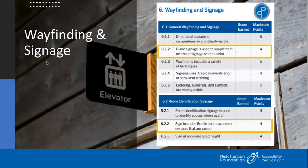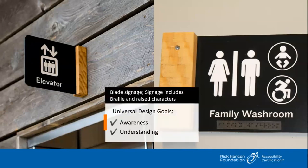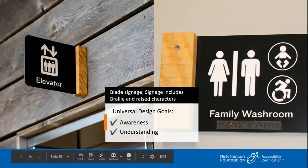Signage and wayfinding — I want to point out the benefits of what we call a blade sign: a sign that sticks out from the wall with both words and symbols, so somebody down a hallway can see it. They're especially useful above washrooms when they're down a long corridor. This is the family washroom sign located on the latch side of the door. The symbols are raised on the surface of this sign and braille has been added, reading 'family washroom' underneath the words. The universal design goal for signage is creating awareness and understanding of where facilities are located.